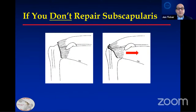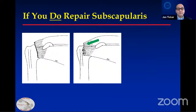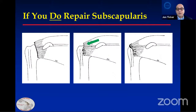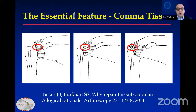Viewed from the front: if you don't repair the subscapularis and only repair the supraspinatus, it's akin to only closing your zipper halfway — it's more likely to re-tear. However, if you do repair the subscapularis, you do that first. You bring the subscapularis into a good position — you'll also translate the posterior superior cuff more laterally to effect a more secure repair. It's because of this comma tissue. Steve Burkhart and I published this some years ago in Arthroscopy.